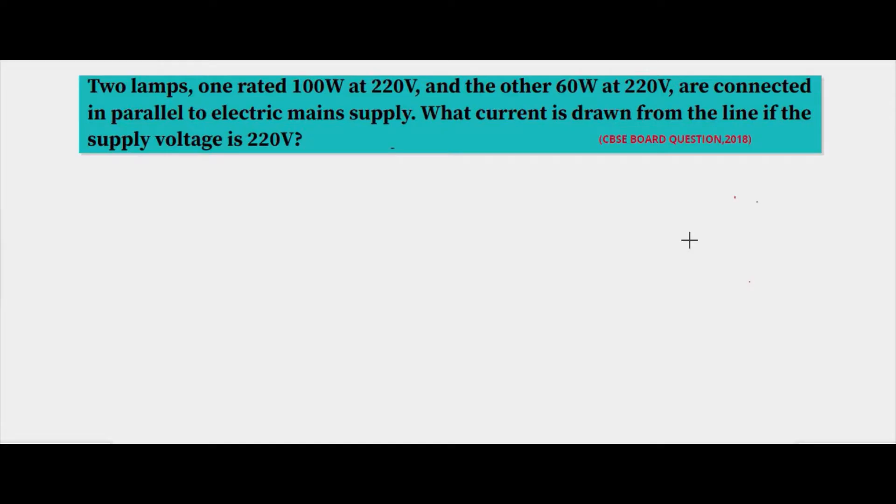Hello students, welcome back. Let's take up the next question from the electricity chapter. It reads: two lamps, one rated 100 watt at 220 volt and another 60 watt at 220 volt, are connected in parallel to electric mains supply. What current is drawn from the line if the supply voltage is 220 volt?